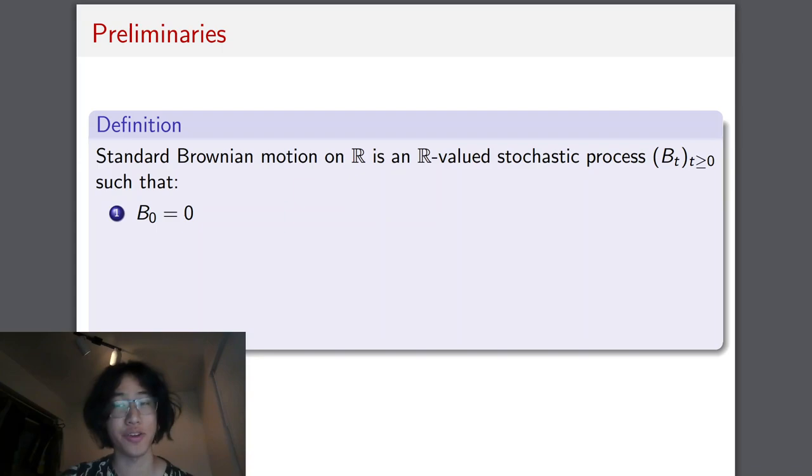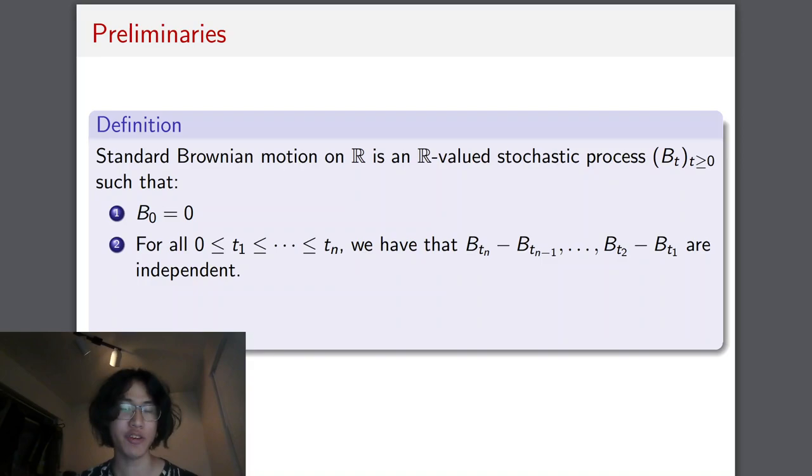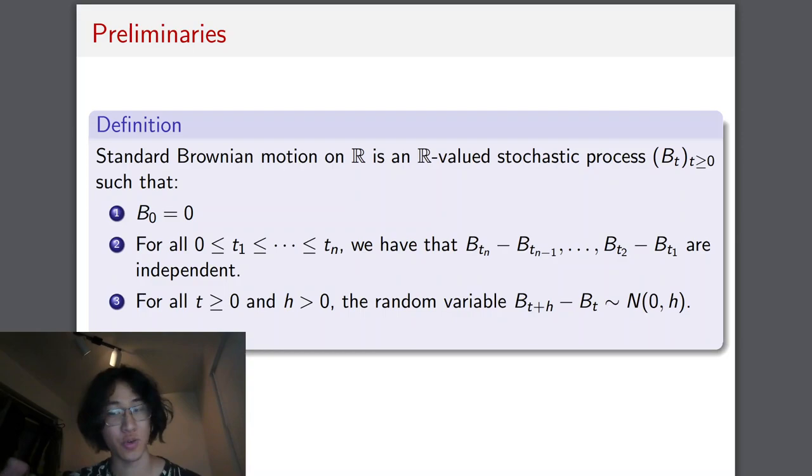So just in preliminary, I'll be defining Brownian motion. Standard Brownian motion is a real-valued stochastic process that starts at zero. That's what makes it standard. It has independent increments, so each increment is an independent random variable. And this increment is normally distributed with mean zero and standard deviation proportional to the size of the increment.